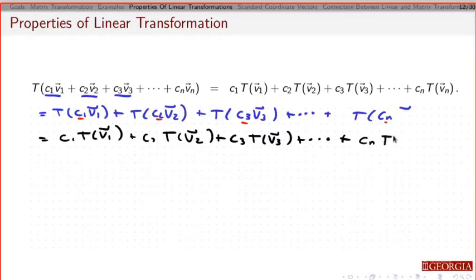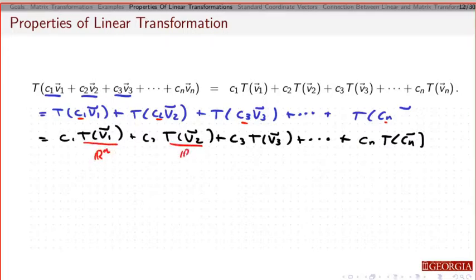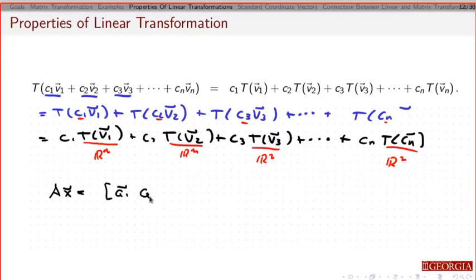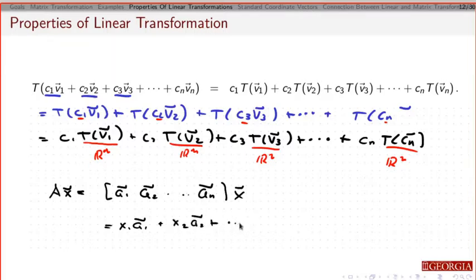So it's going to be c1·T(v1) plus ... plus cn·T(vn). This basically says that I can do this operation all at once, and a linear combination of these things gives me that. This is going to be a very important result. That's a vector in Rm, that's a vector in Rm, and so on — so keep in mind that if I take a matrix times a vector, I can think of that in terms of the columns. We're going to take advantage of this later — that's a really important result.